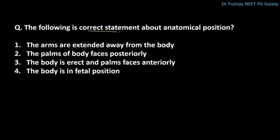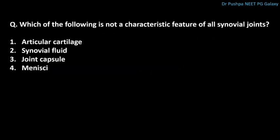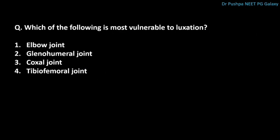In anatomical position, the body is erect and the palms face anteriorly. The arm should be by the side, adducted, and the palm should face anteriorly. Menisci is not a characteristic feature of all synovial joints; it is seen only in the knee joint. Which of the following is most vulnerable to luxation? The correct answer is the glenohumeral joint, i.e., the shoulder joint. Because of its shallow socket and weak ligamentous support, it is more vulnerable to dislocation.